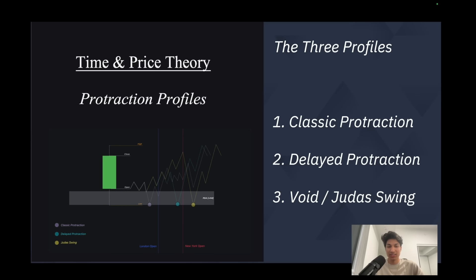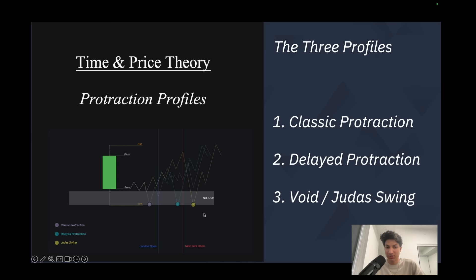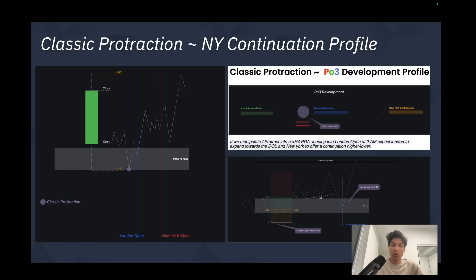There are three profiles of interest: first, classic protraction; second, delayed protraction; and third, a void profile called a Judas swing. A classic protraction occurs when London forms the low of the day and then expands higher. A delayed protraction occurs when the low forms right before the New York session. A Judas swing involves Asian and London accumulation followed by a manipulation of the range in New York and then an expansion.